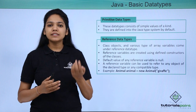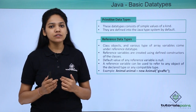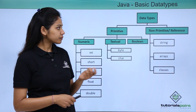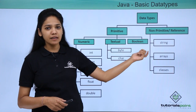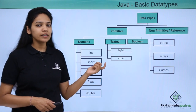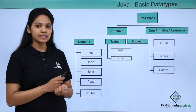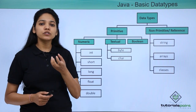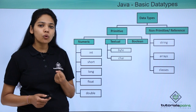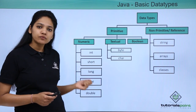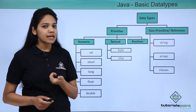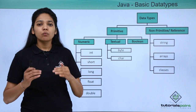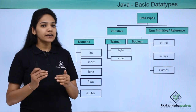Going forward, we will see how you create these reference objects. For now, we need to understand what these data types are and the differences between them. Primitive data types, which hold a value, will be stored in the stack. Whereas reference types will store the value in the heap.